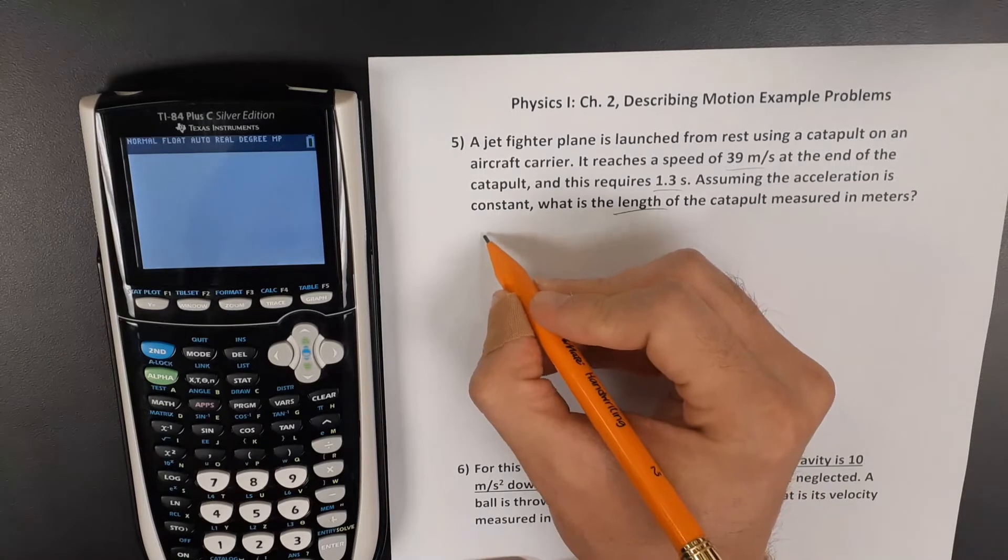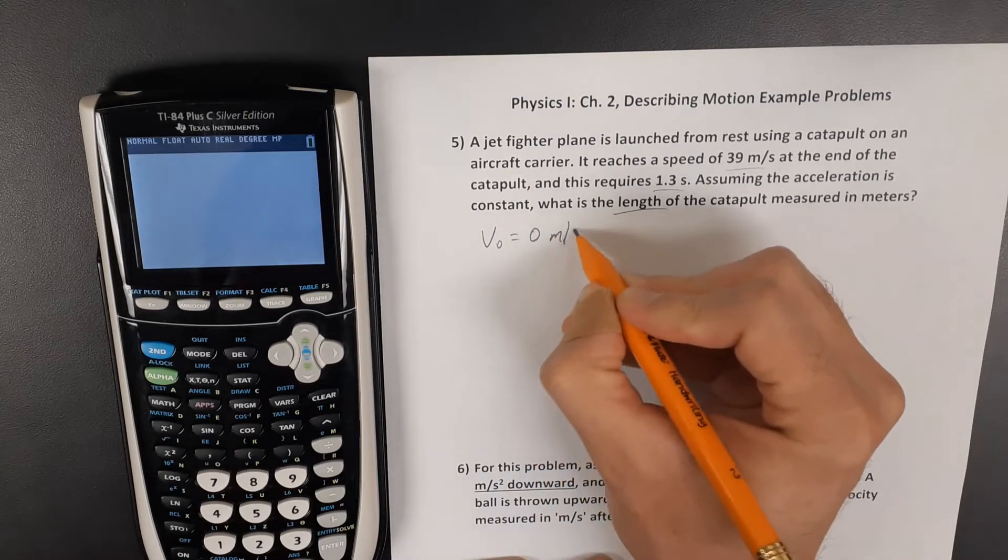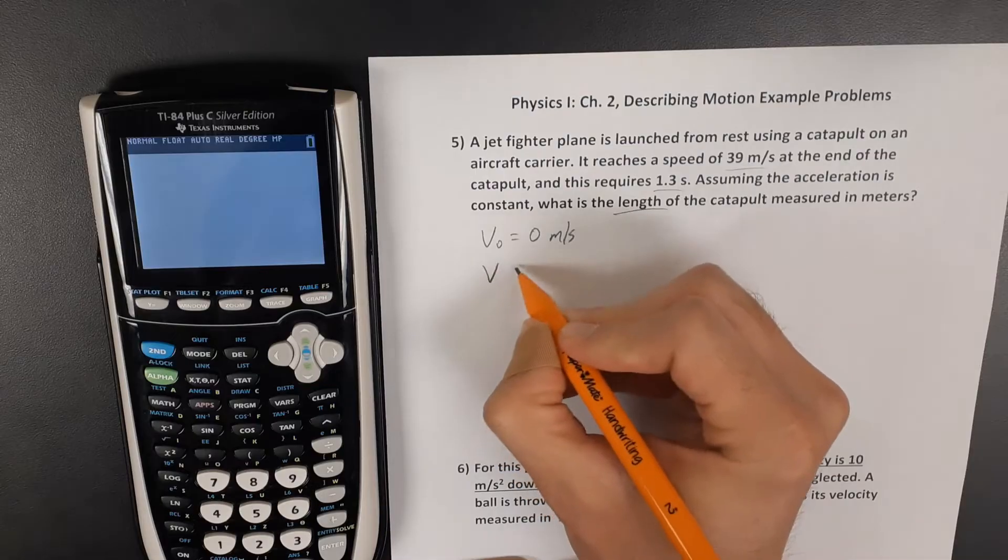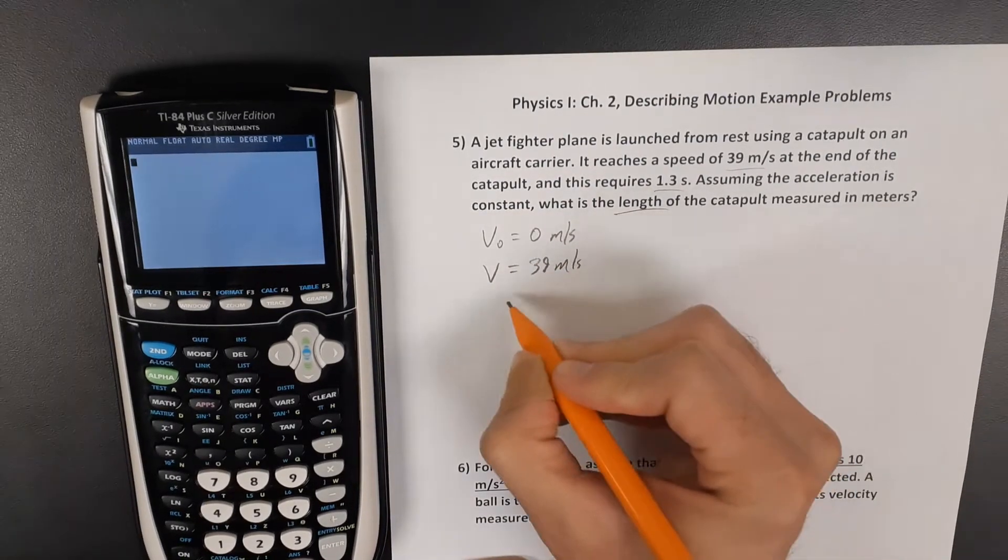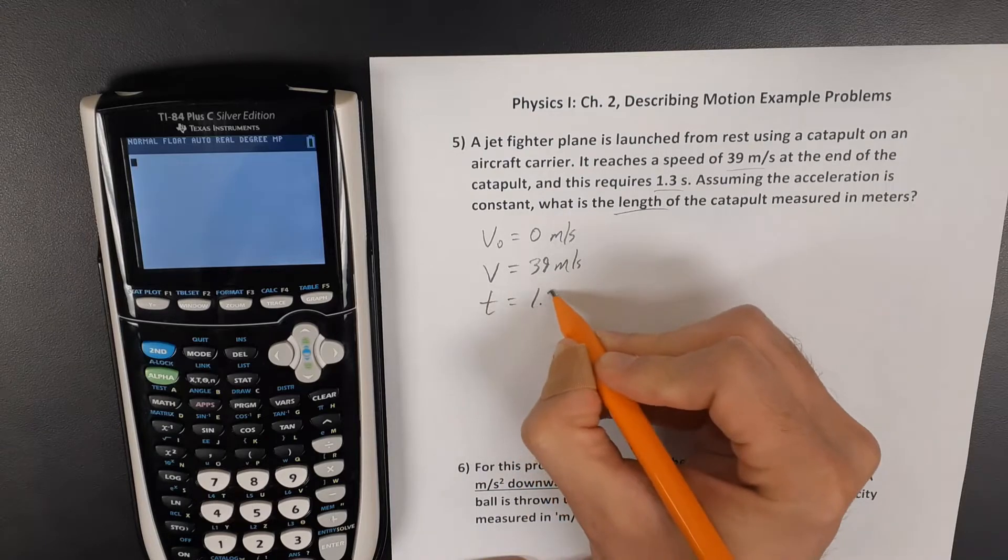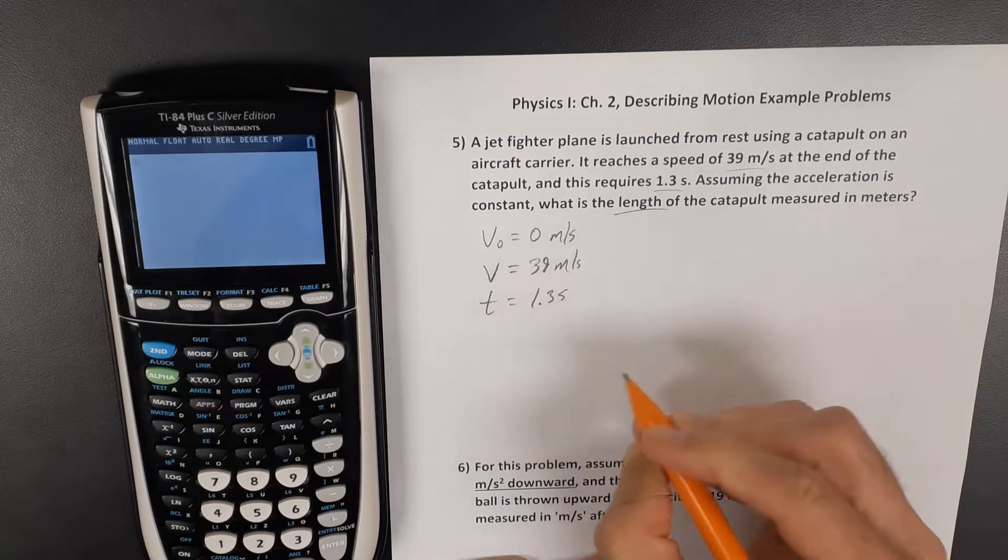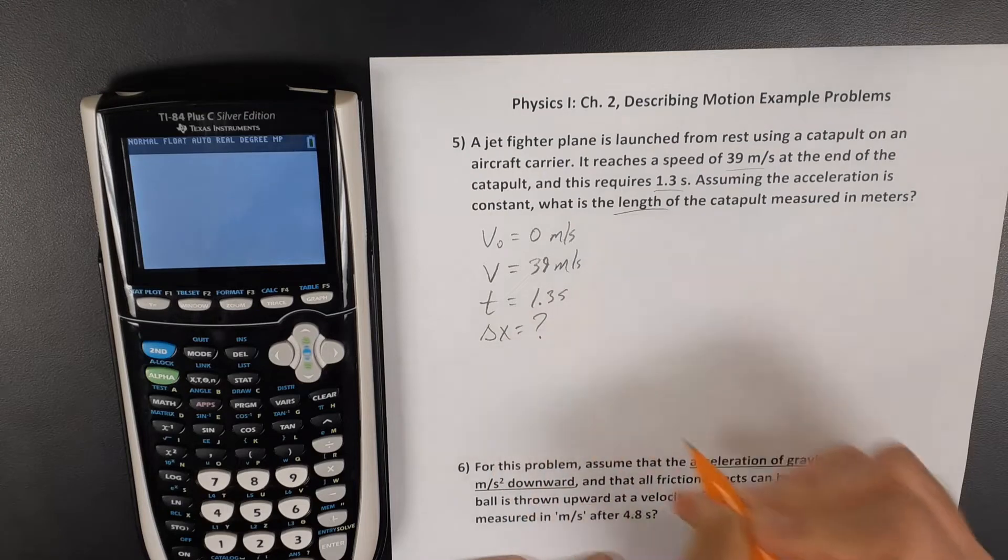So we have an original velocity of zero, the plane is sitting still. It's launched with a final speed of 39 meters per second and a time of 1.3 seconds. What is the displacement?